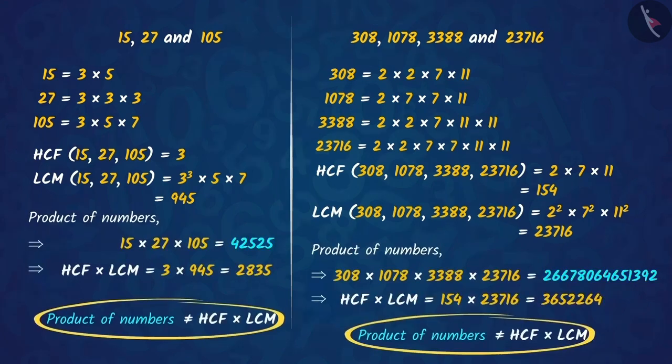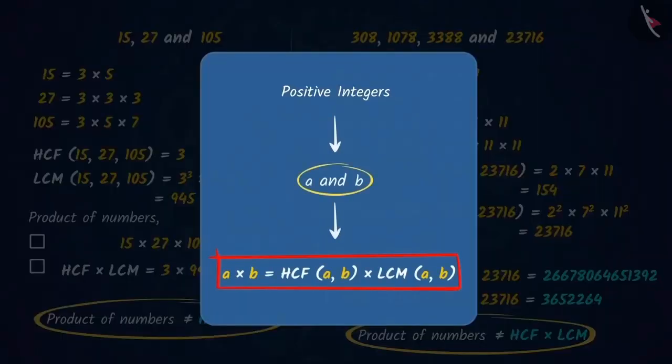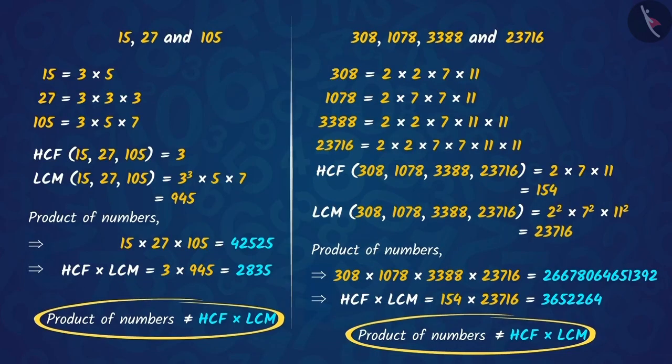On solving, you will find that the product of numbers and the product of their HCF and LCM are not equal. Thus, we can say that this statement is not valid for more than two positive integers. You can also test this by taking any group of numbers yourself.